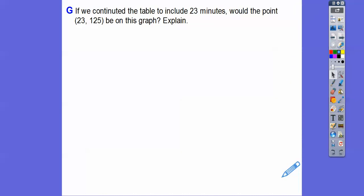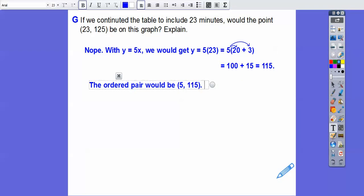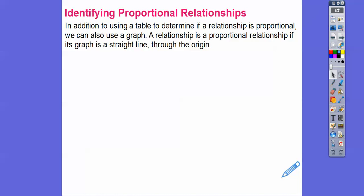If we continued the table to include 23 minutes, would the point 23,125 be on this graph? Remember, the equation is y equals 5x, so plugging in 23: 23 times 5 equals 115, not 125. That gives us the ordered pair 23,115 — not 23,125. Mistakes are good — you make them less and less every time.